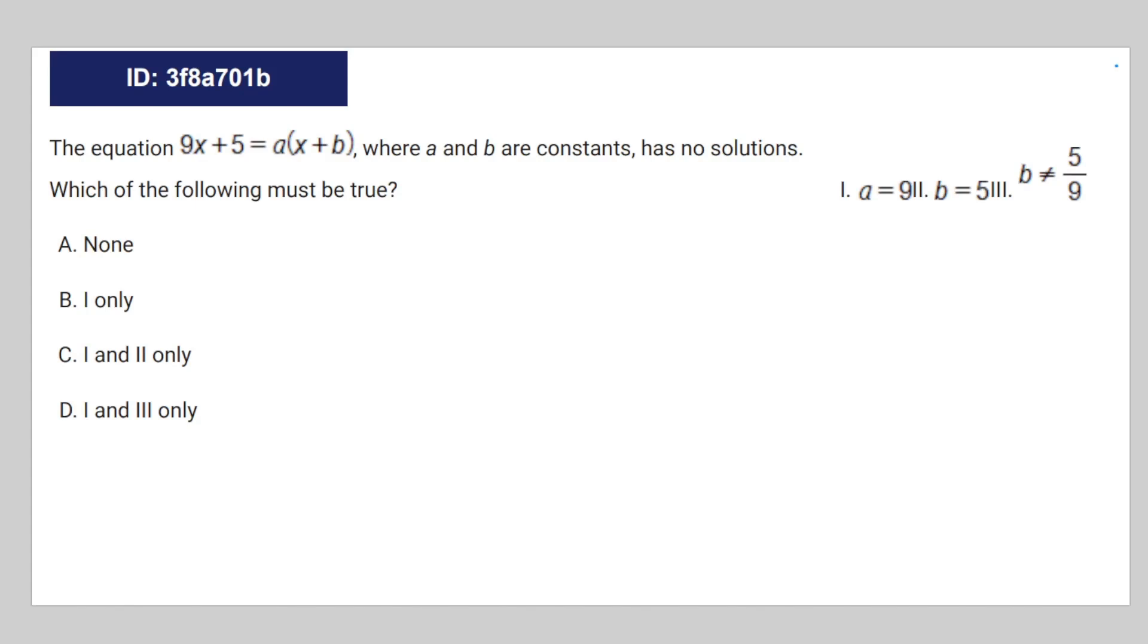Okay, so we have this algebra question. 9x plus 5 is equal to ax plus b, where a and b are constants. It has no solutions. Which of the following must be true?